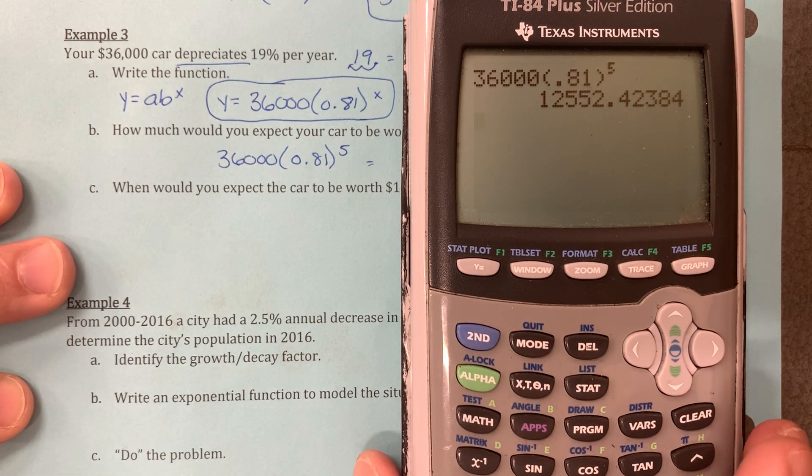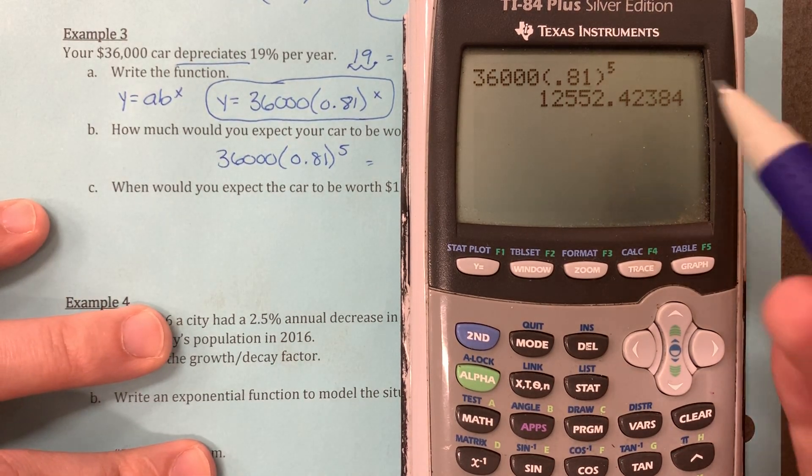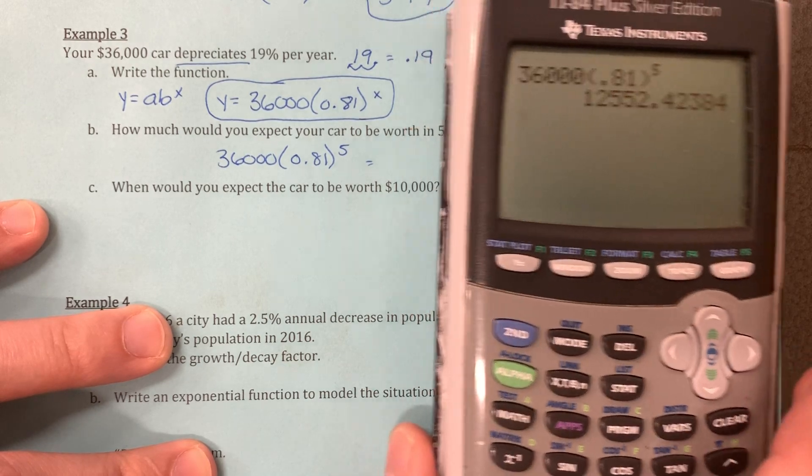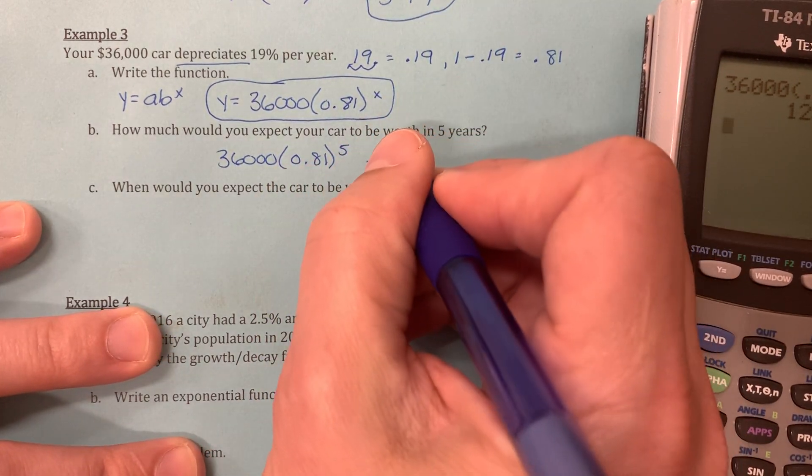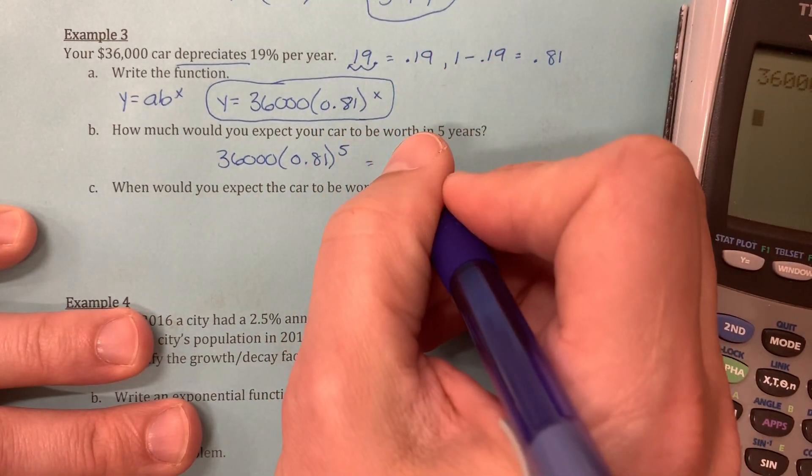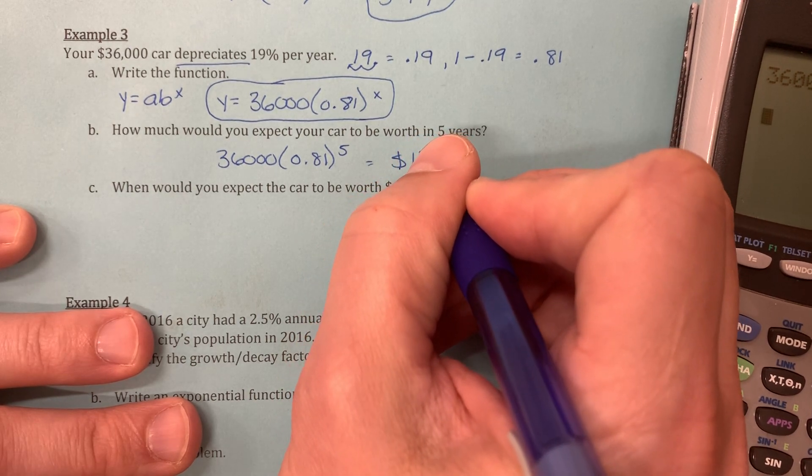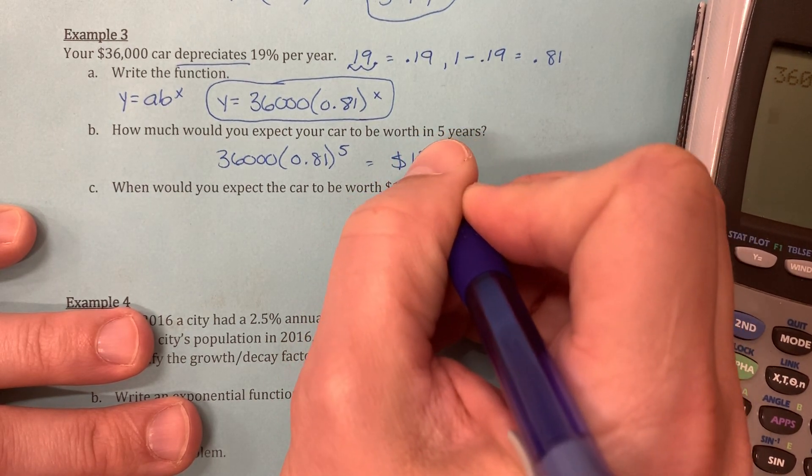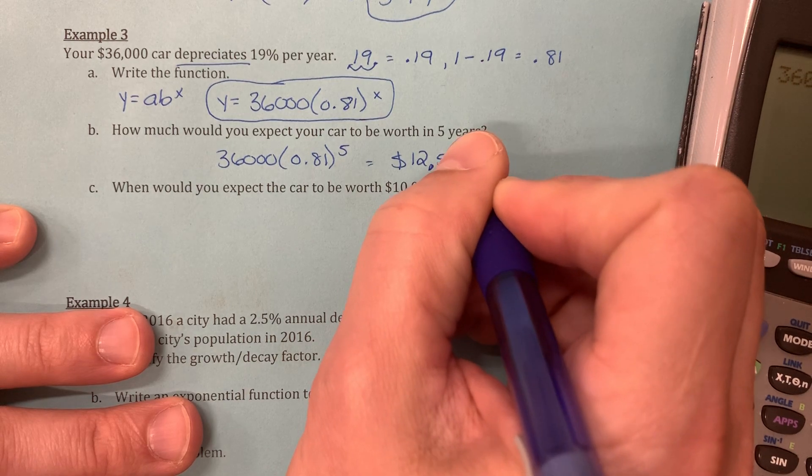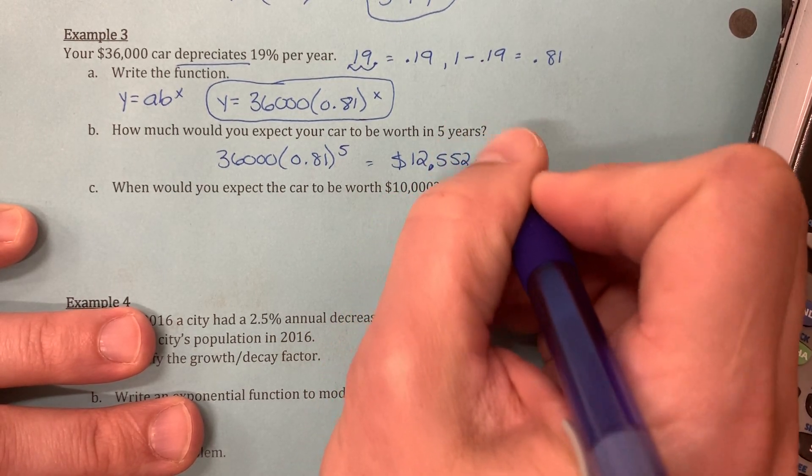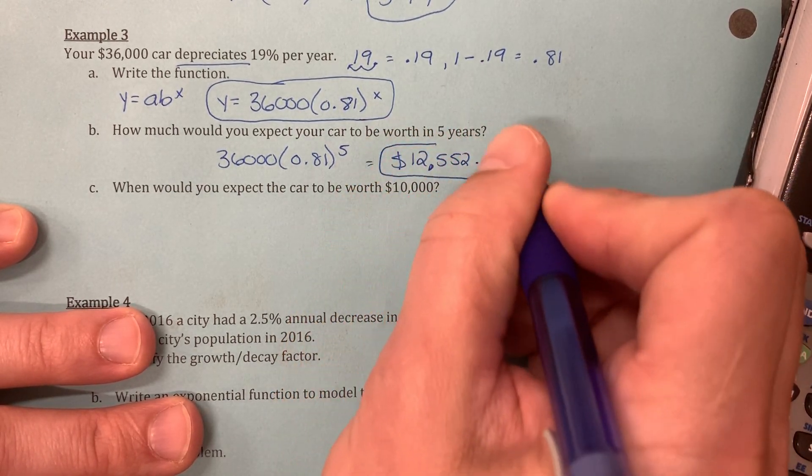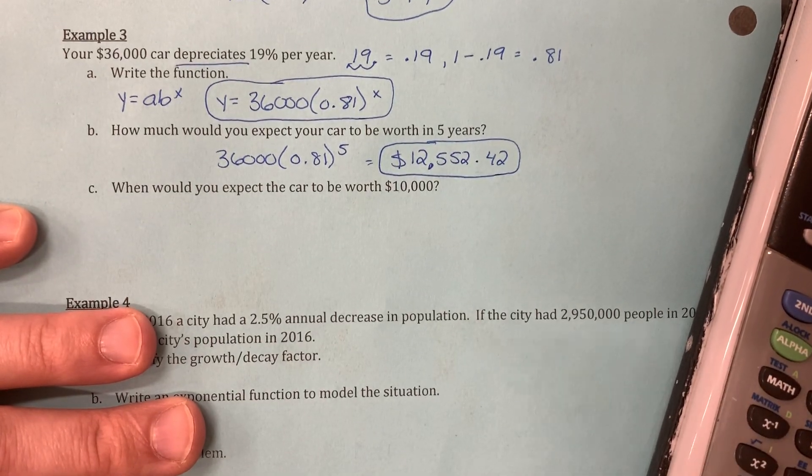And since we're talking the value of a car, we're talking about money, which means I do want to round it off at a second decimal place. Money has two decimal places, so we say it's about $12,552.42. And there's the value of your car after 5 years, sorry.